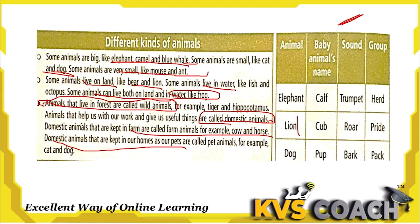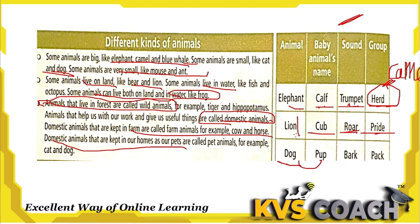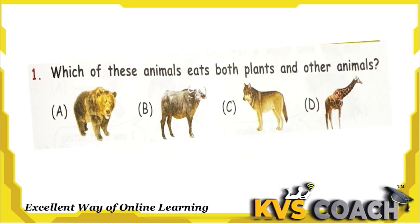Here is a table showing animal names, their baby names, sounds, and group names. Elephant baby is called a calf, its sound is called a trumpet, and a group of elephants is called a herd. Lion baby is called a cub, its sound is a roar, and a group of lions is called a pride. Dog baby is called a pup, its sound is bark, and a group of dogs is called a pack — same as a group of wolves.